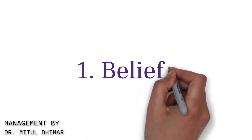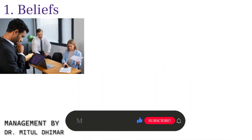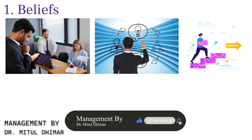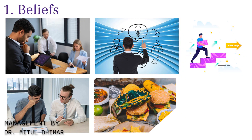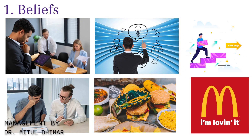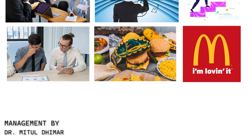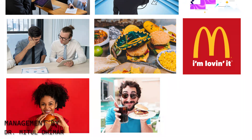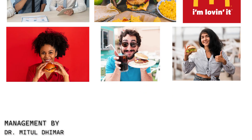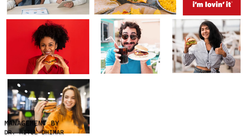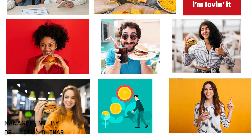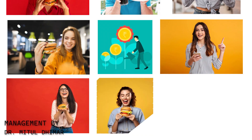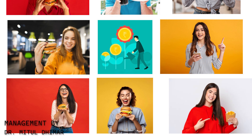Number one: Beliefs. This part is all about what we think will happen when we take certain actions. Let's look at a classic example from the fast food industry. McDonald's uses its 'I'm Lovin' It' campaign to shape customer beliefs about their food by associating McDonald's with happiness and satisfaction. They influence people's choices and drive sales — when customers believe that eating at McDonald's will make them happy, they are more likely to choose McDonald's over other options.